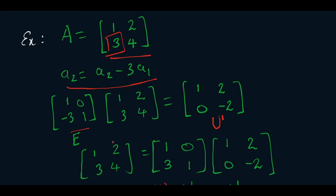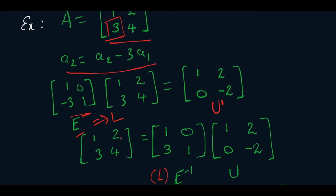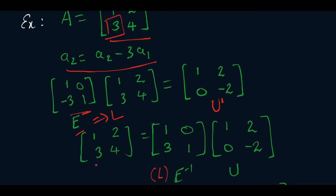Now we will take the inverse of this elimination matrix to get L. So [1,2;3,4] has been converted into L times U form.